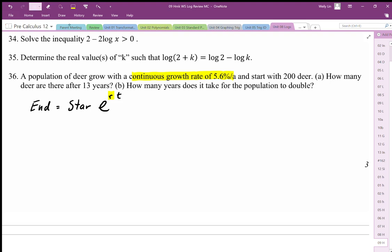Question number 36 requires the continuous growth rate formula. The continuous growth rate formula is: end equals start times e to the rt. The starting value is our initial value, and the end value is what we have.